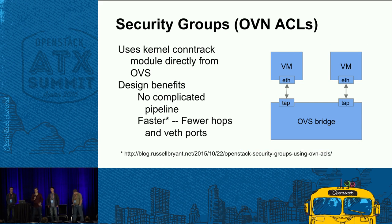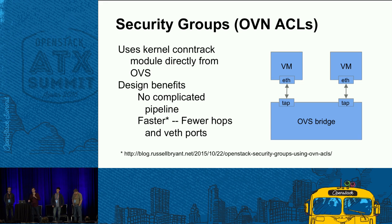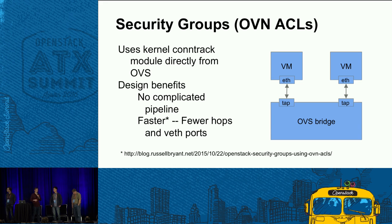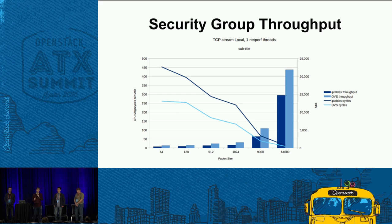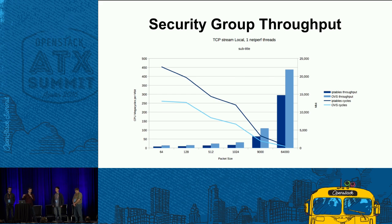With OVN, we're using a new approach — making use of connection tracking so that stateful connections can be managed and maintained by OVS itself. By doing that, we don't have to go out to iptables to do stateful firewalling, so it's much more streamlined. This is something we introduced a while ago; there was a presentation yesterday about the existing OVS plugin making use of this as well. The throughput improves significantly by not going through those multiple stages.